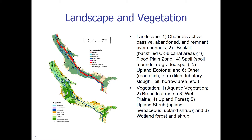Let us look at the landscape and vegetation of the Kissimmee River basin. The landscape includes active, abandoned, passive, and remnant river channels, black backfill, the floodplain zone, spoil, the upper ecotone, and others including road ditch, farm ditch, tributary slope, pit, and borrow areas. The vegetation is variable, ranging from aquatic vegetation, broadleaf marsh, wet prairie, upland forest, upland shrub, herbaceous, and wetland forest and shrub. Take particular note of the spoil area shown in deep red, as we will be referring to this area in subsequent slides.